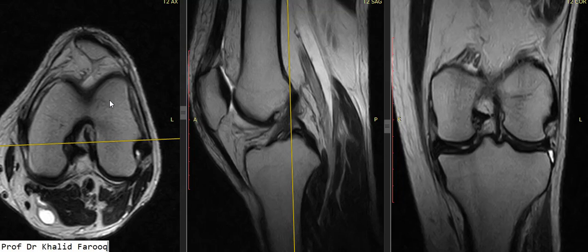Here we can see this is axial T2 weighted sequence — the area of the intercondylar notch, attachment of PCL, and this is the anterior cruciate ligament which is attached on the medial aspect of the lateral femoral condyle. So this is the normal anatomy of the anterior cruciate ligament.